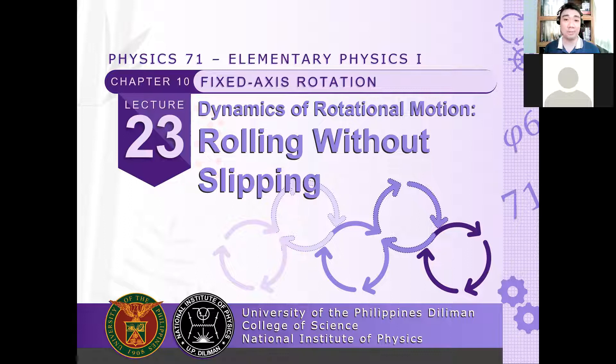For today, we will be discussing rolling without slipping. The object or rigid body we're considering doesn't have any fixed axis anymore. What we now have is an axis or center of mass that is also translating alongside the rotation done by the rigid body — so there are now two motions happening. The question is: how do we analyze these systems?